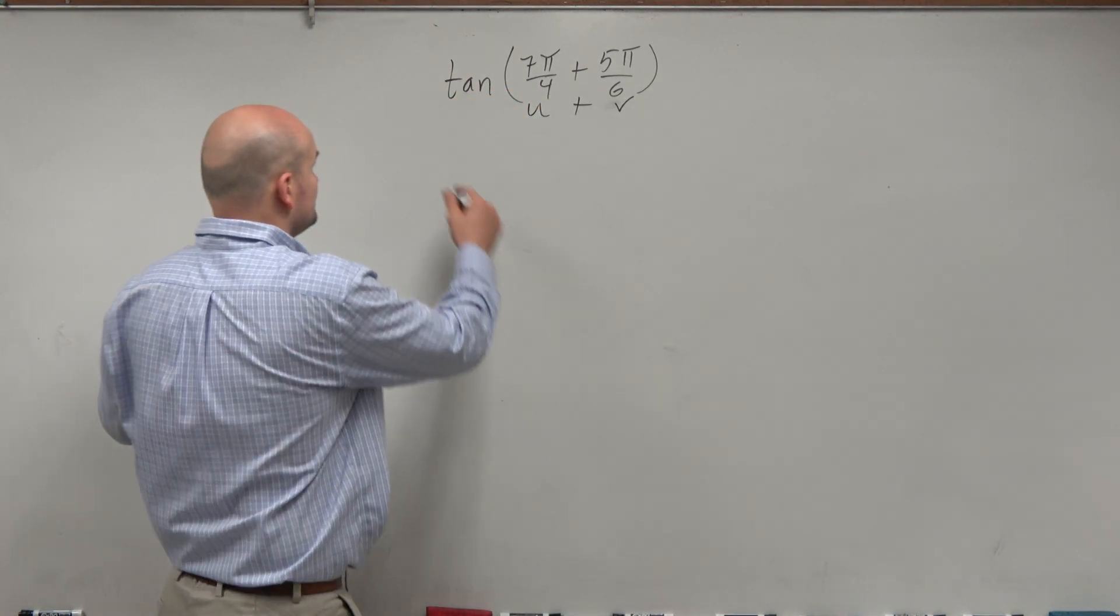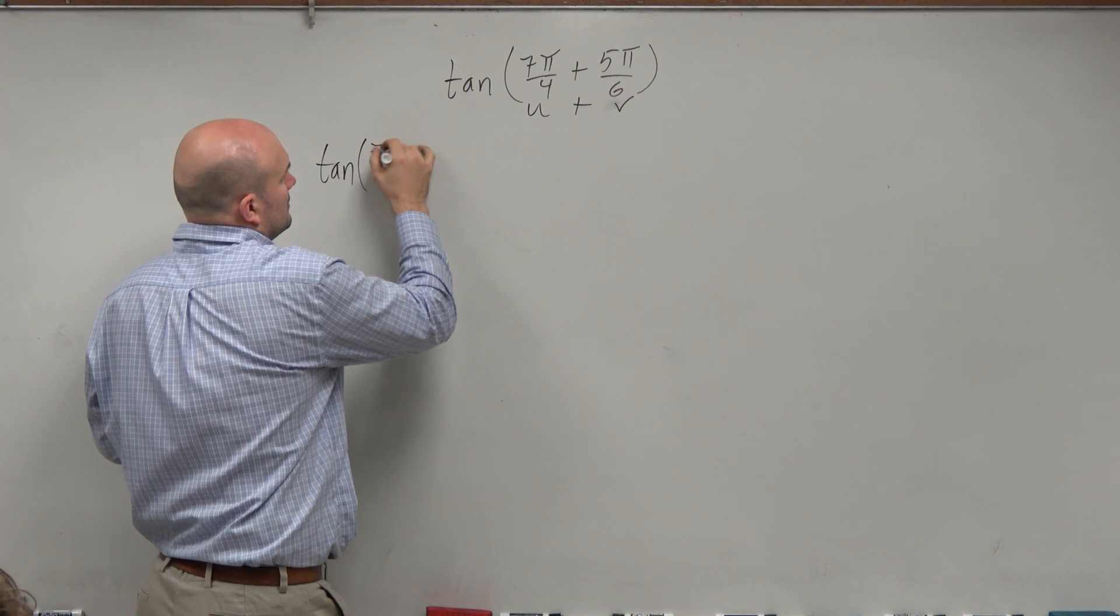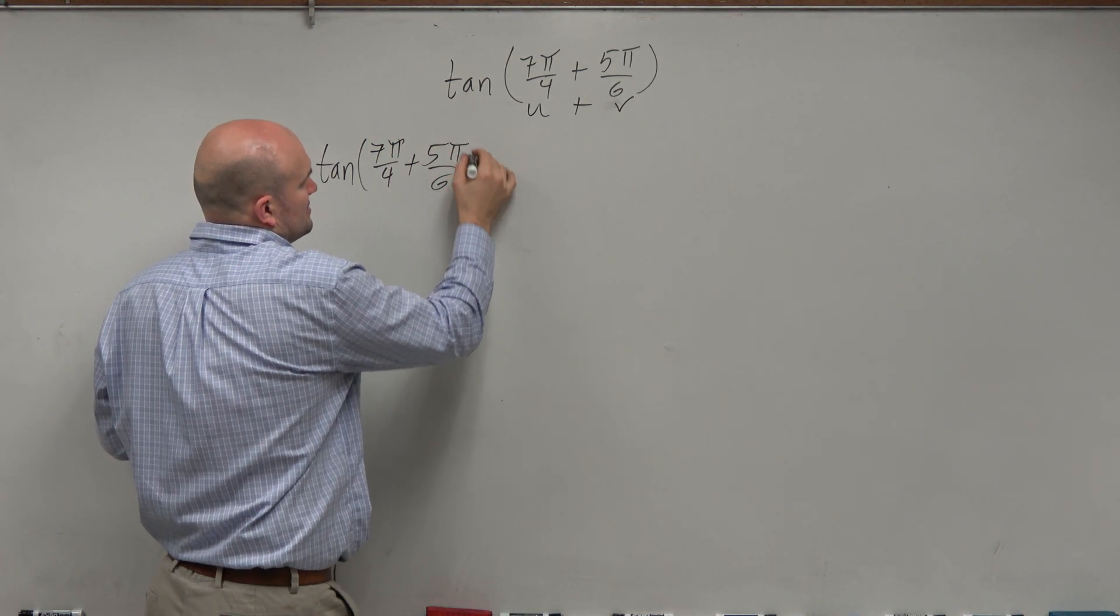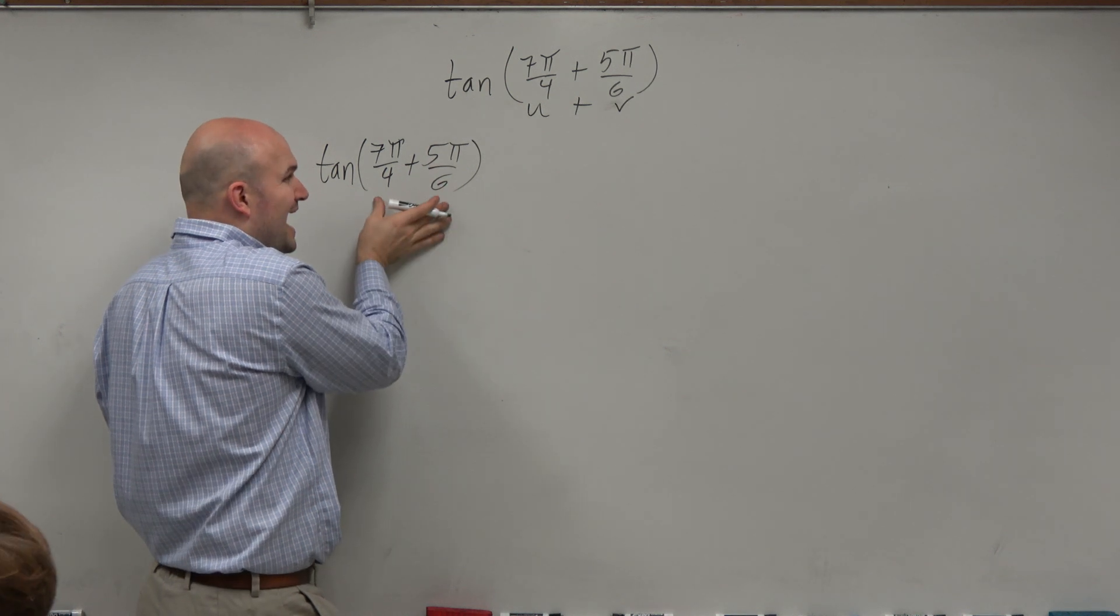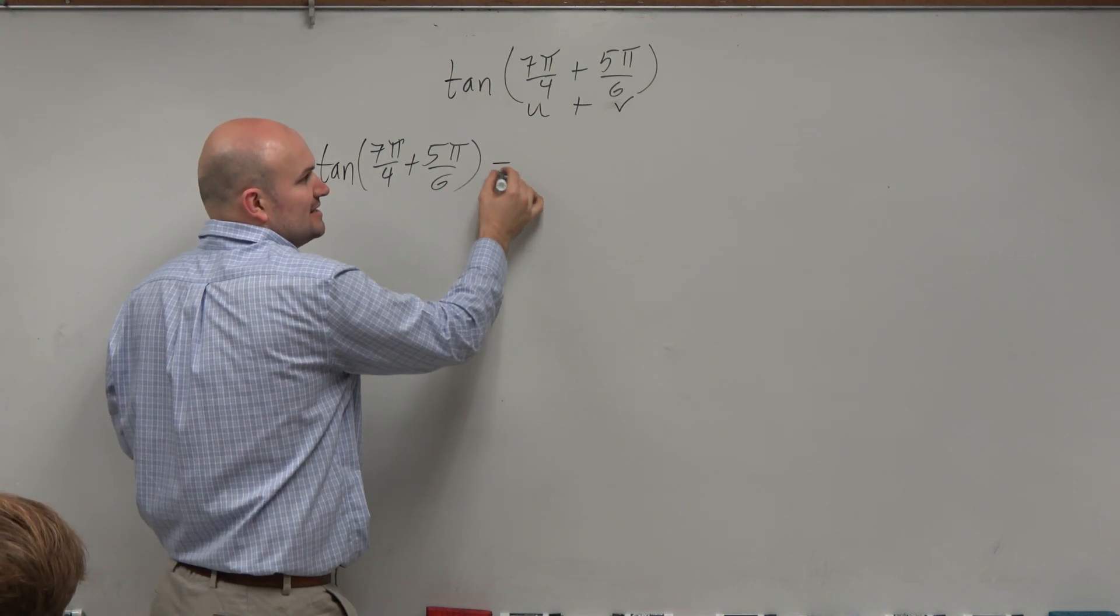Now, notice in the formula, when you're adding two angles for tangent, you add in the numerator, but subtract in the denominator.